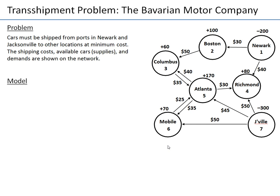In this case, the network flow model is already provided — the picture on the right shows the network flow model for this problem. Sometimes data for all connections, costs, supplies, and demands will be given and you will have to draw the network yourself, but here it is provided. The question now is how to convert or transform this model into a linear programming model.